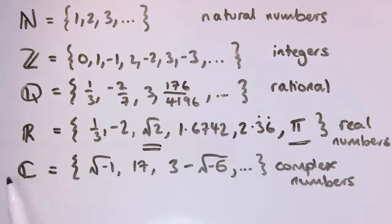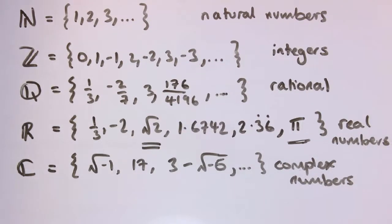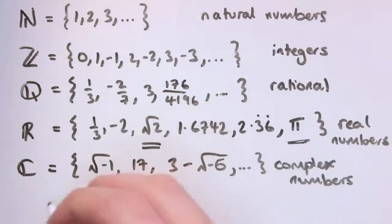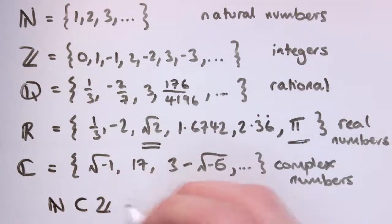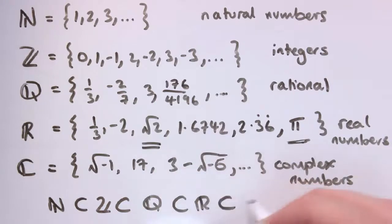Actually you can take this even further and define complex numbers to include things like the square root of minus one. Three minus the square root of minus six. In real numbers we can't take the square root of negative numbers that doesn't make sense. But it's possible to extend the system even further into complex numbers. I'm not going to go into that here. That'll be in some A level further maths. But just to say that we've got this sort of hierarchy of special sets. So I could write here N is contained in Z is contained in Q is contained in R is contained in C.